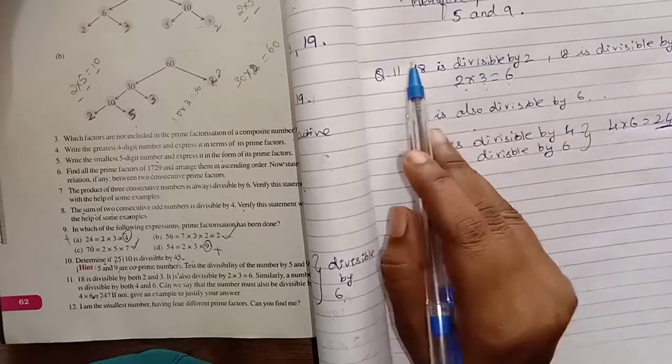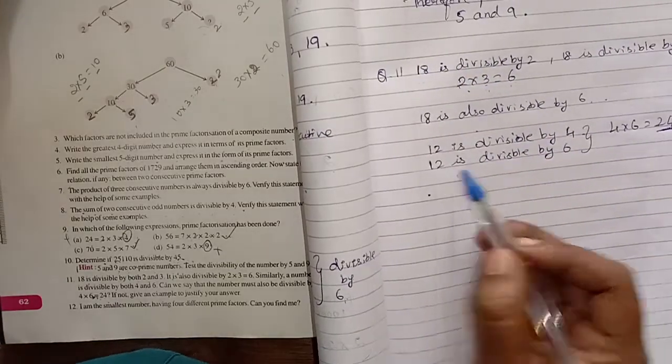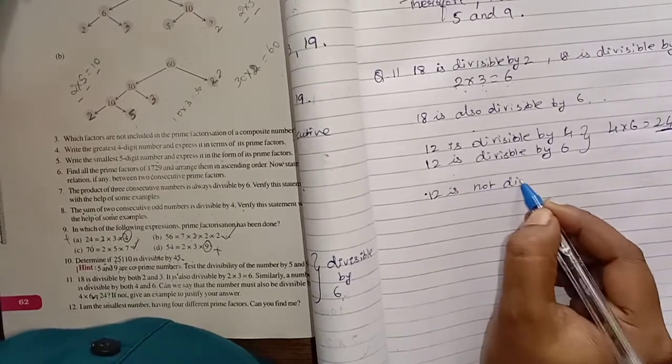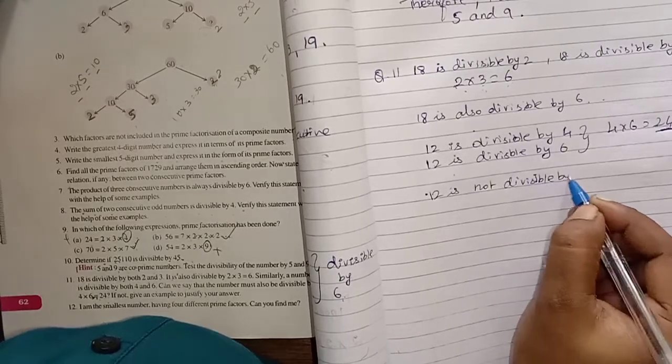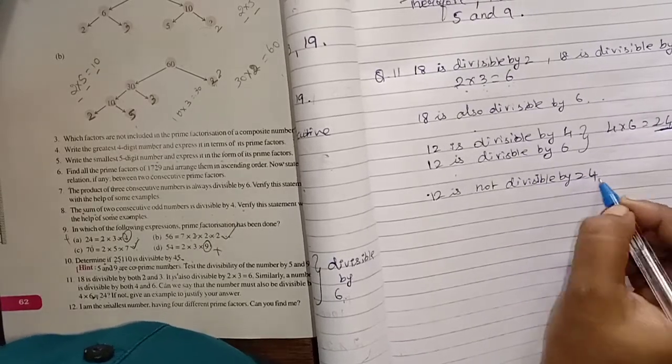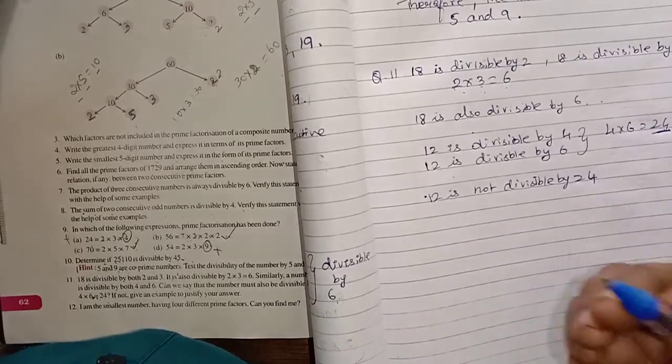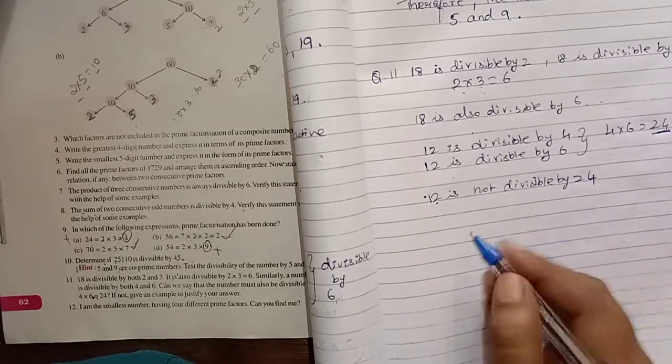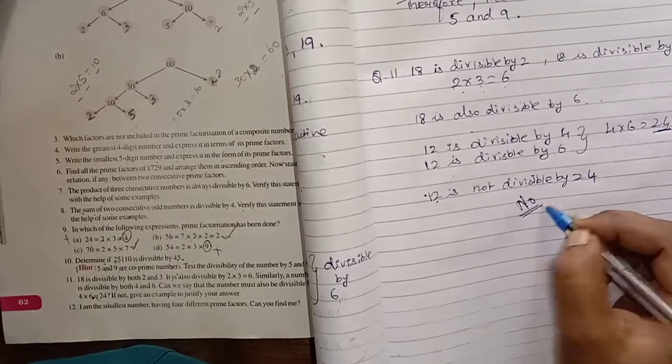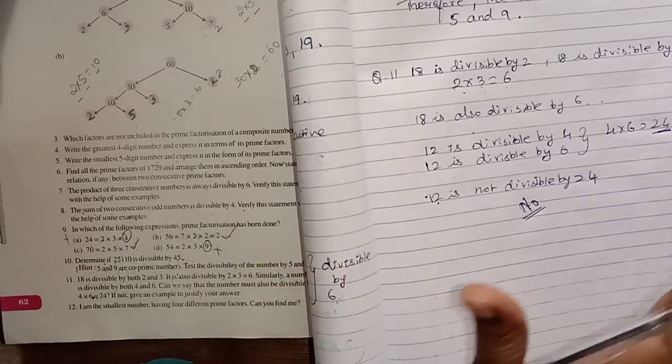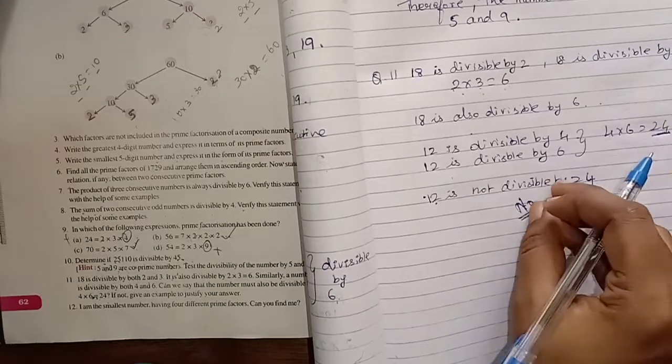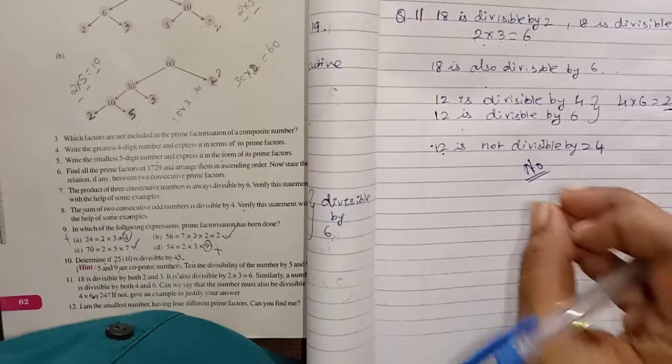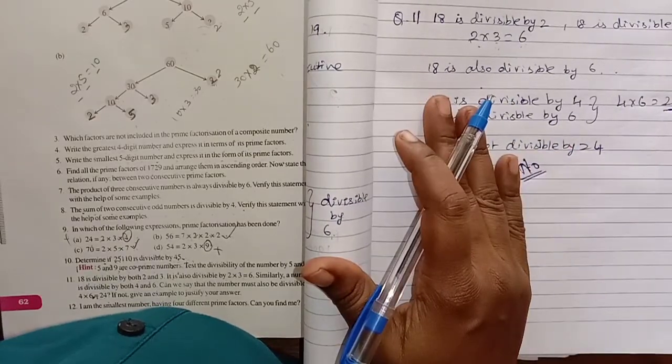Now, we will find out the number is 12. We check if 12 is divisible by 24. 12 is not divisible by 24. Therefore, we can solve this question.